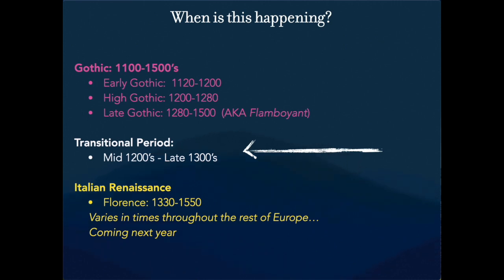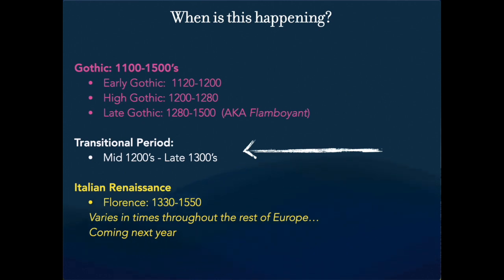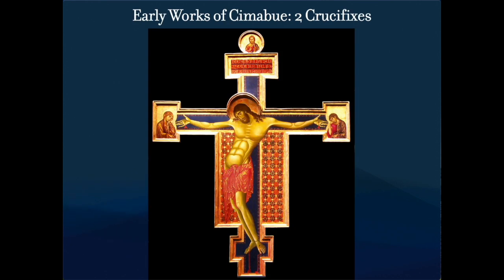Last time we saw a movement away from the Byzantine style — the development of what's called the Italo-Byzantine style — and we looked at Duccio, greatly influenced by Byzantine artists. Byzantine artists were coming into Italy throughout this period from the mid-700s and 800s onward, and Italian artists are going to take that Byzantine style along with medieval and gothic influences and meld them into one unique style.